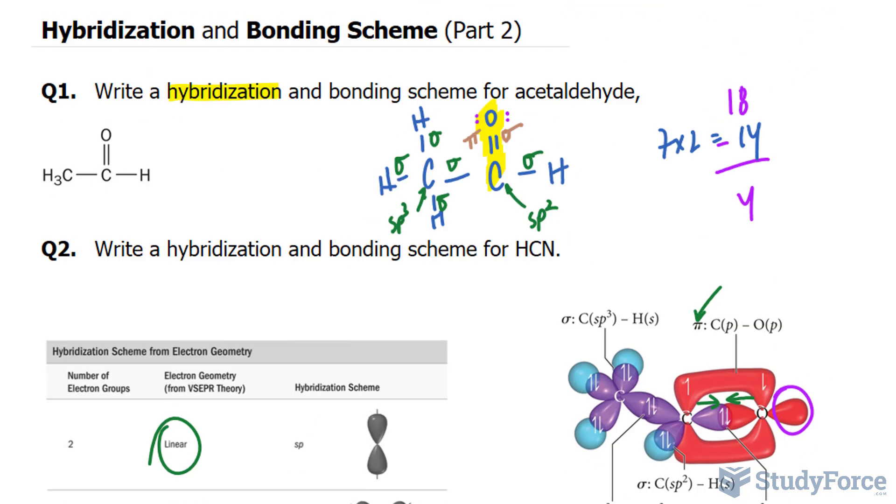And there you have it. Two more examples on how to find the hybridization and bonding scheme of molecules.